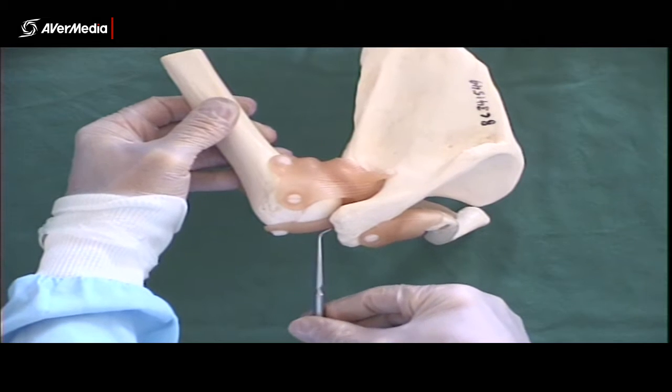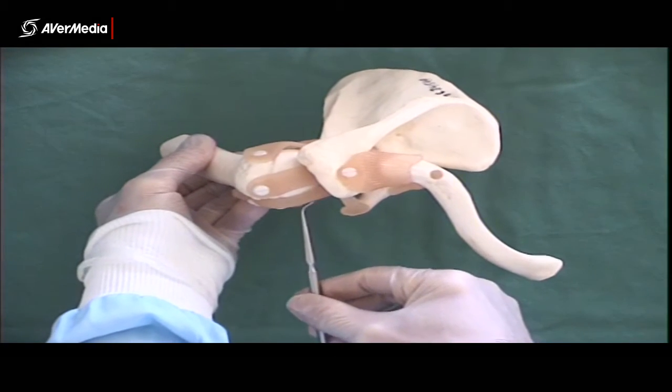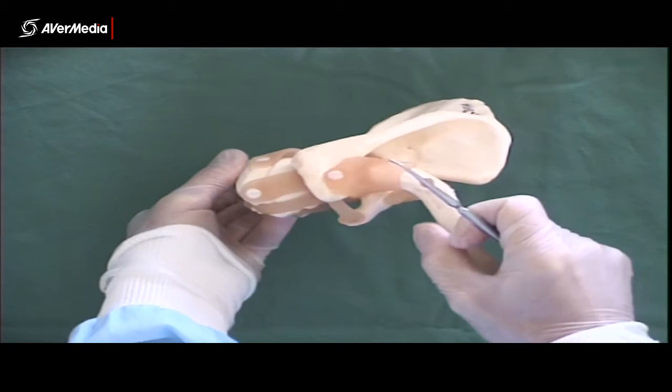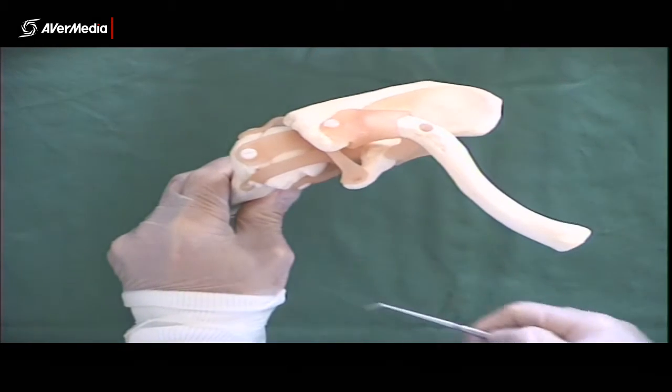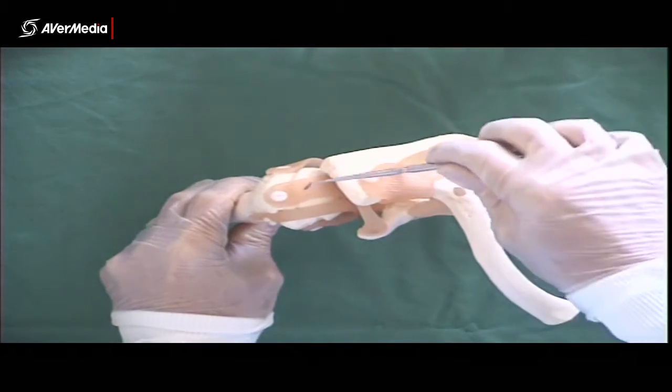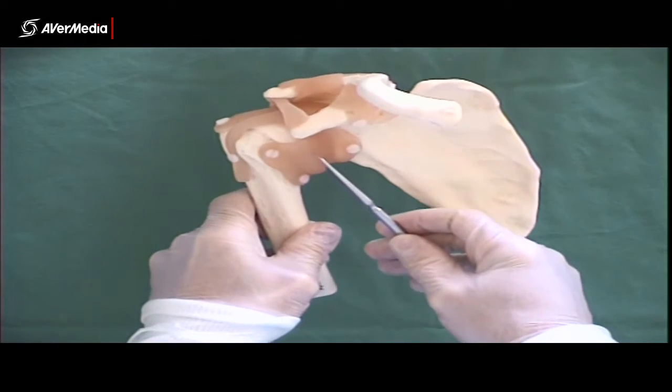But it would in real life cover this whole region here. But the superior part of the capsule is missing from this model so that we can see these other structures here. So we can only see part of it here.